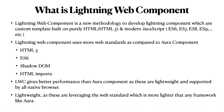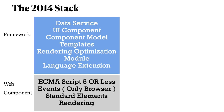To understand this better, let's look at the 2014 web stack. In 2014, we were using data services, Lightning, and UI components for developing custom UI. We also had custom models, and we had to use templates from the Aura framework itself. For rendering optimization, we had to develop our own kind of frameworks to optimize the rendering of any UI.